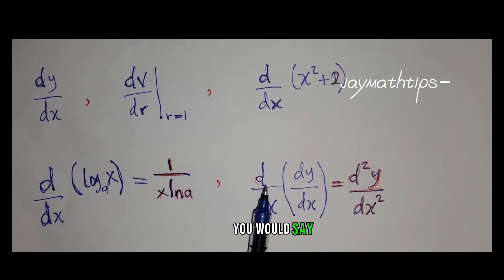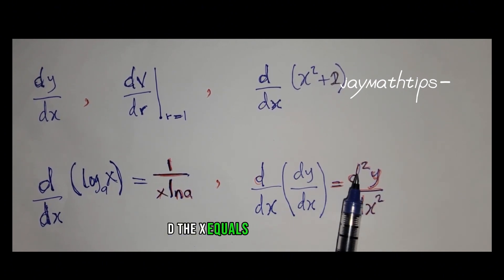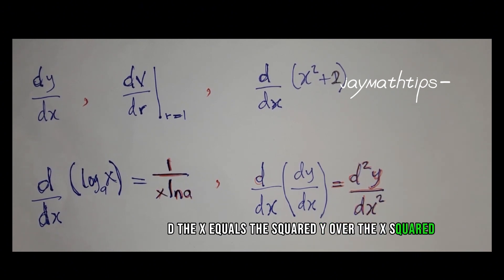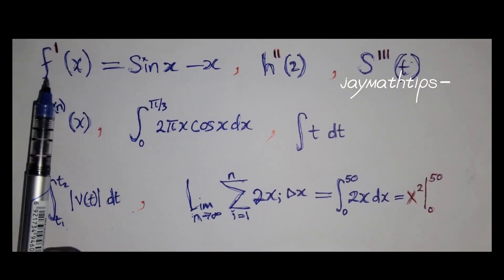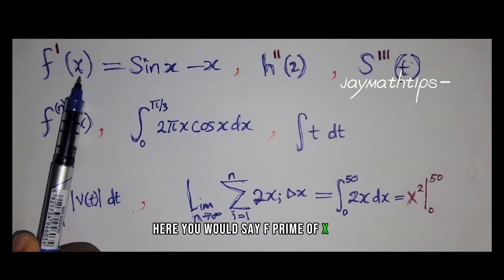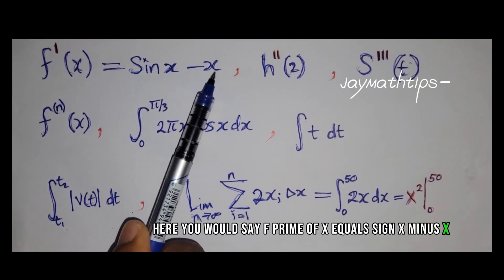Here you would say d dx of dy dx equals d squared y over dx squared. Here you would say f prime of x equals sine x minus x.